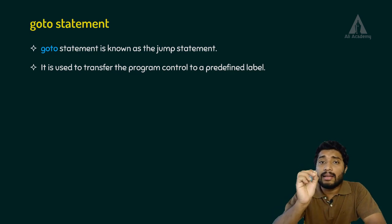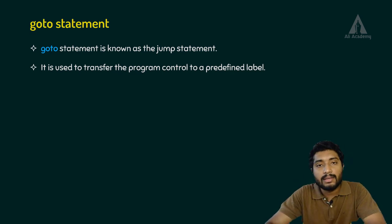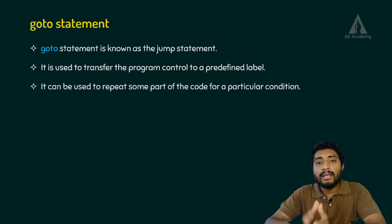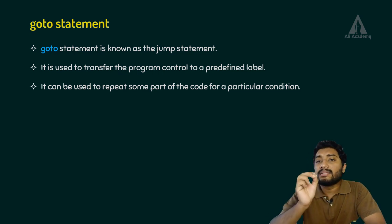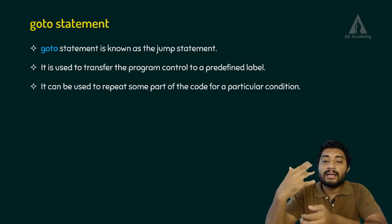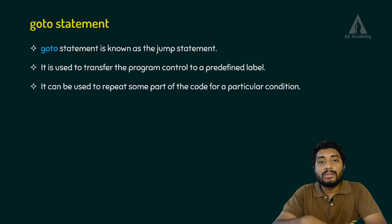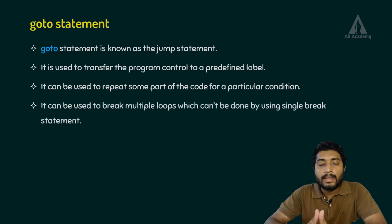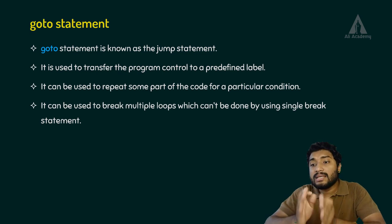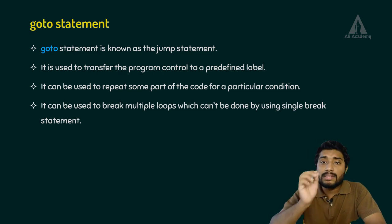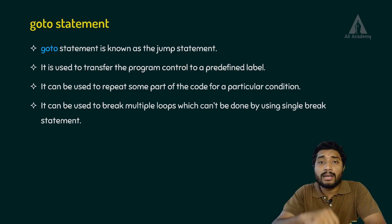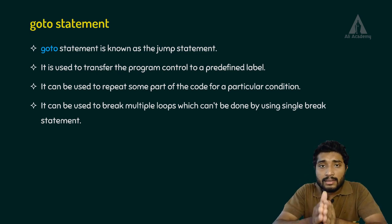The goto statement in C programming language can be used to repeat some part of the code when a particular condition is satisfied. It can also be used to break multiple loops, which cannot easily be done using a single break statement. Using goto, we can exit multiple loops at a single time.